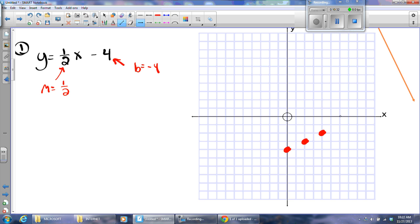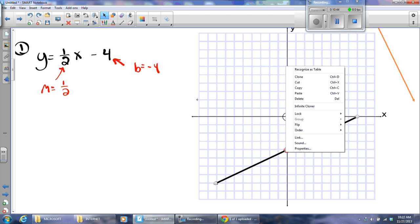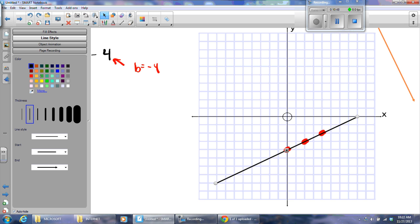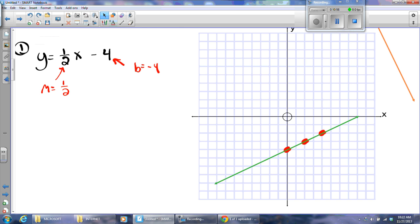Now, I want to point out something else to you. If I do m equals one-half, I can change both signs and still have the same fraction. Negative divided by a negative is a positive. Watch what happens if I use this for my slope. I'm going to go rise negative one and run negative two. Look at that. I end up on the same line. Go down one, left two. I end up on the same line. So, I can change both signs and go the other direction.